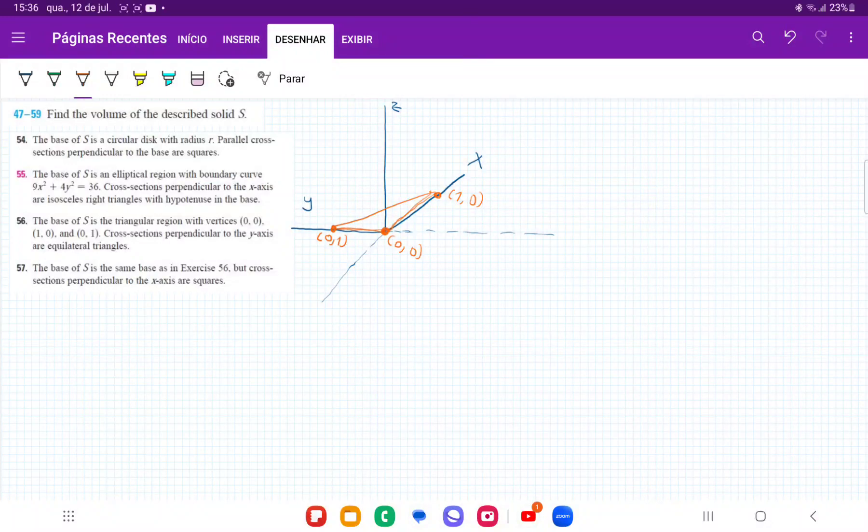So for number 56, we have a triangular region with vertices (0,0), (0,1), and (1,0). So I've gone ahead and drawn that. And then it's telling us that cross-sections perpendicular to the y-axis are equilateral triangles.